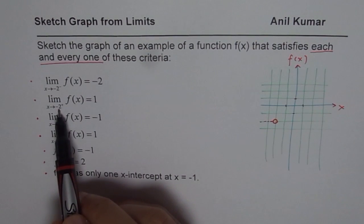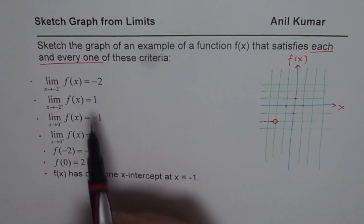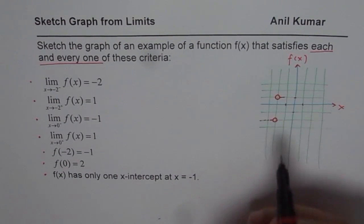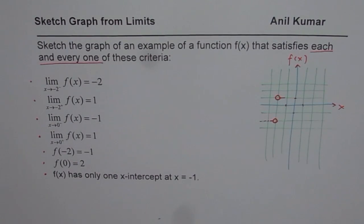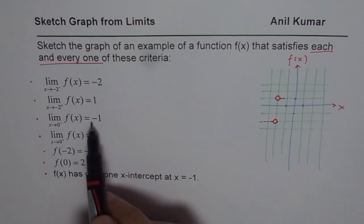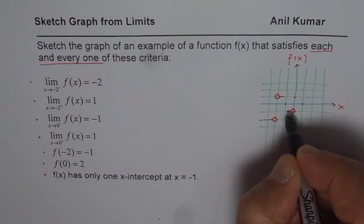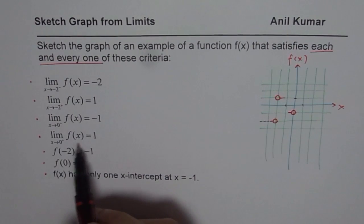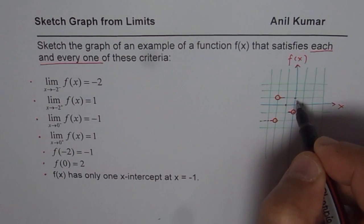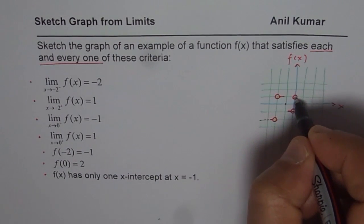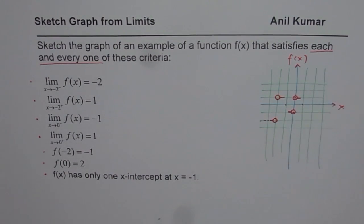When approaching x = -2 from the right side, the limit is 1 — that is the value you are approaching from the right. When approaching 0 from the left side, you approach -1, so I mark that. From the right side, approaching 0 gives +1, so I make a hole there. These open circles represent values you are approaching but not actually reaching.